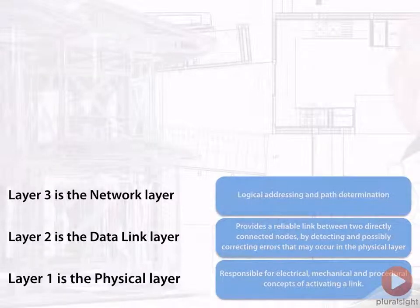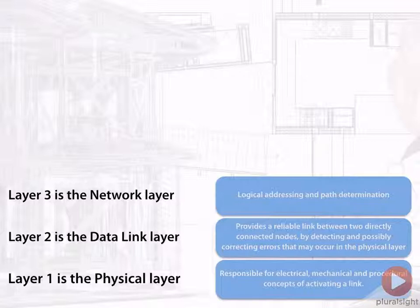Layer three is what we call the network layer. The network layer is responsible for logical addressing, and the logical addressing that is prevalent today is, of course, IP version four. This is the layer that would also be responsible for IP version six. It is also responsible for using those addresses and determining the best path.